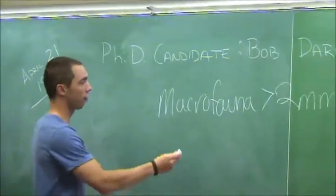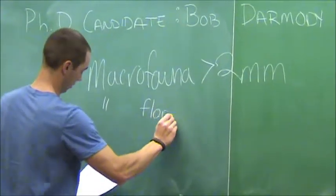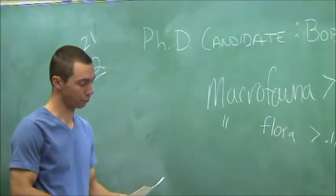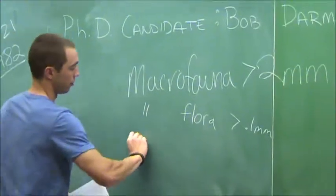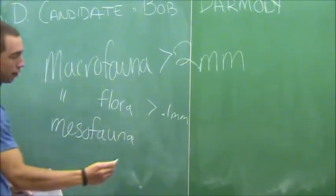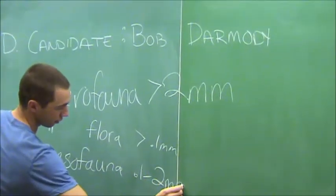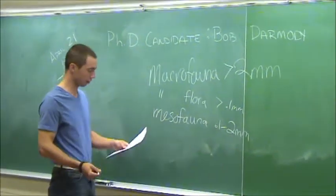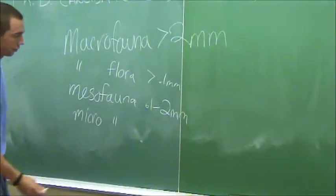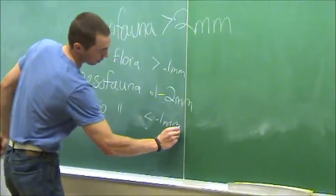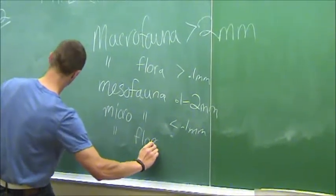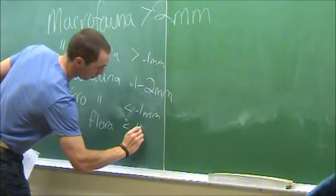Macroflora is greater than 0.1 millimeters. Next is mesopata, which ranges from 0.1 to 2 millimeters. After that, we have microfauna — these are less than 0.1 millimeters, so they're really, really small. We're going to need a microscope to look at those later. And after that, we have microflora, which are also less than 0.1 millimeters.